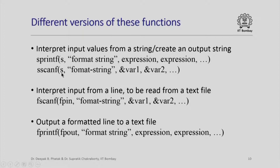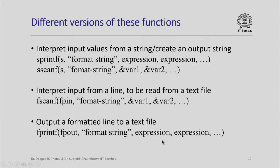Exactly the same concept can be used for interpreting or outputting values not from or into a character string, but from files. For example, to interpret input from a text file I can use fscanf. fscanf has exactly the same components as scanf — a format string and a list of variable parameters — but the first parameter is fpin, which is a file pointer associated with an input text file. In exactly the same fashion, I can output a formatted line to a text file by giving fpout as the first parameter for fprintf.